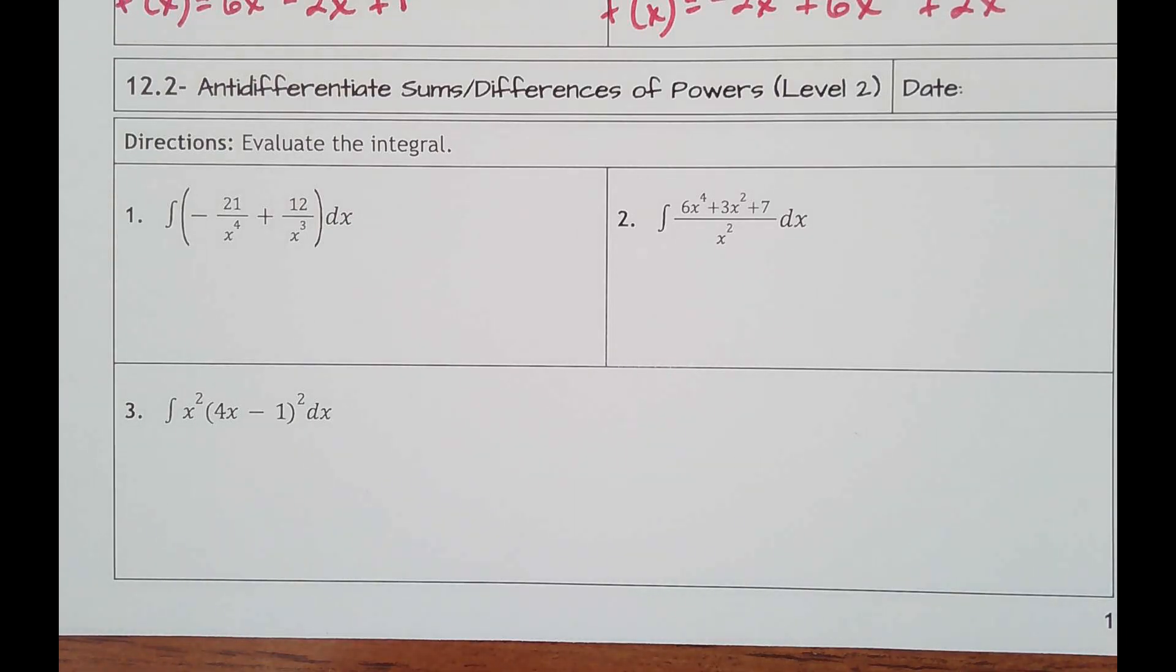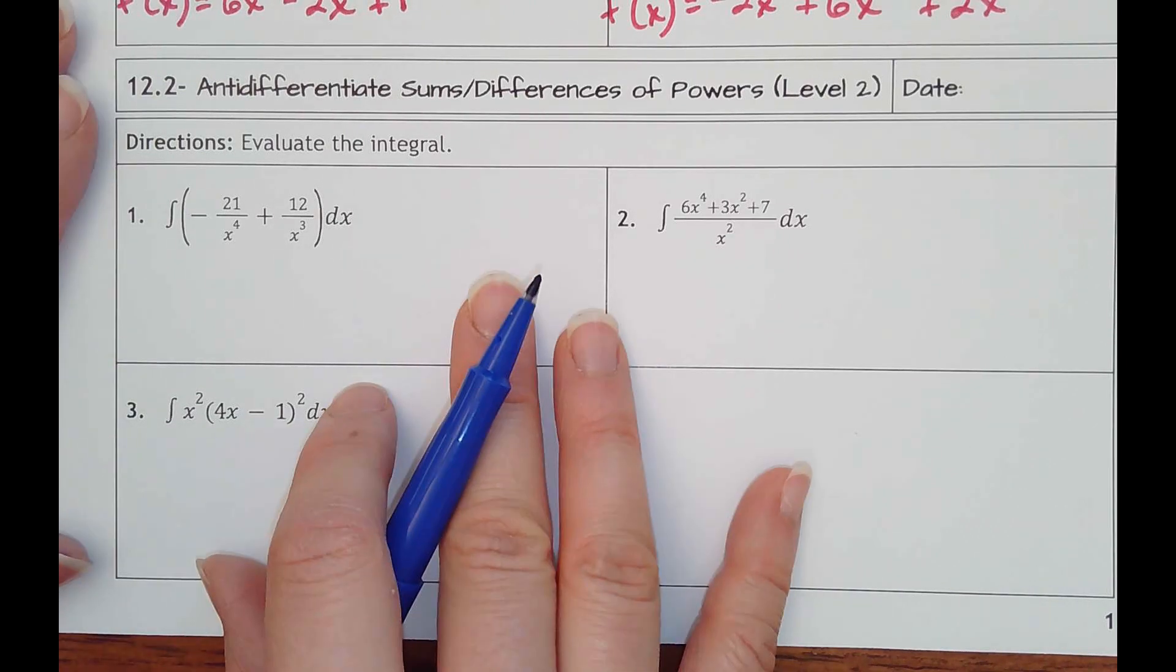Lesson 12.2 is anti-differentiate sums and differences of powers level 2. The only thing that's really different about this is you might have to change how a function looks so that you can do a quicker version of what we did on the last lesson.